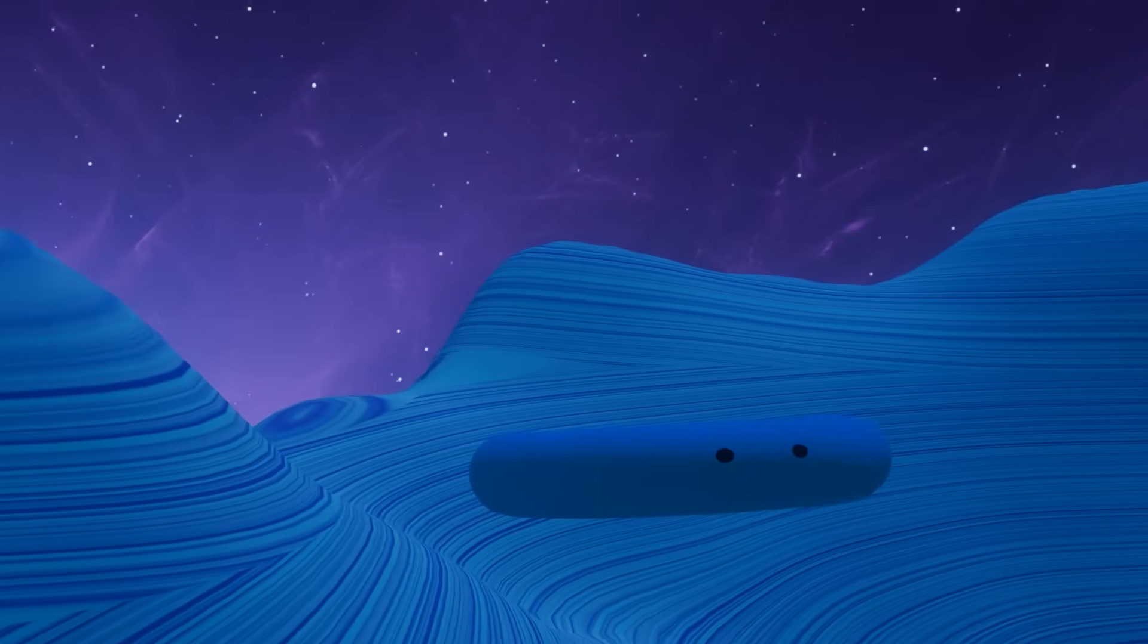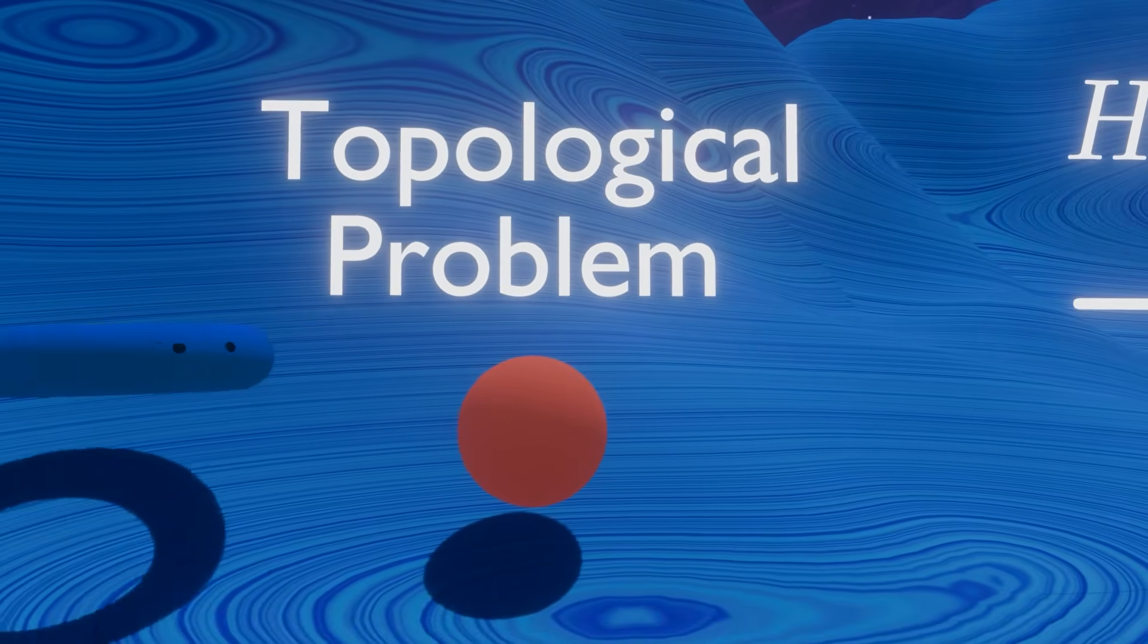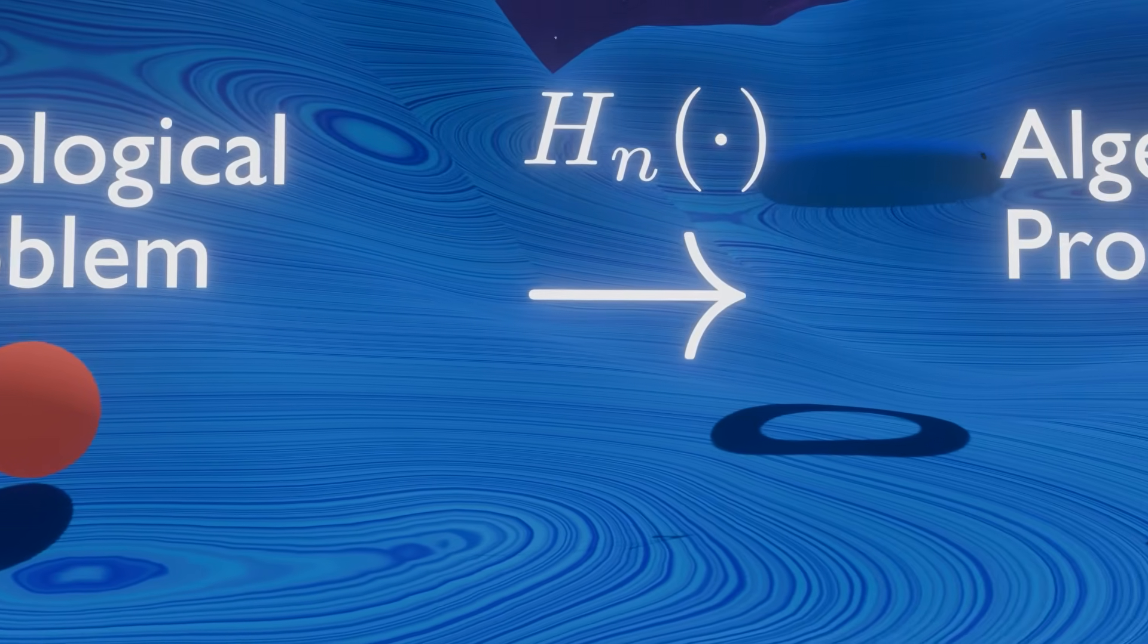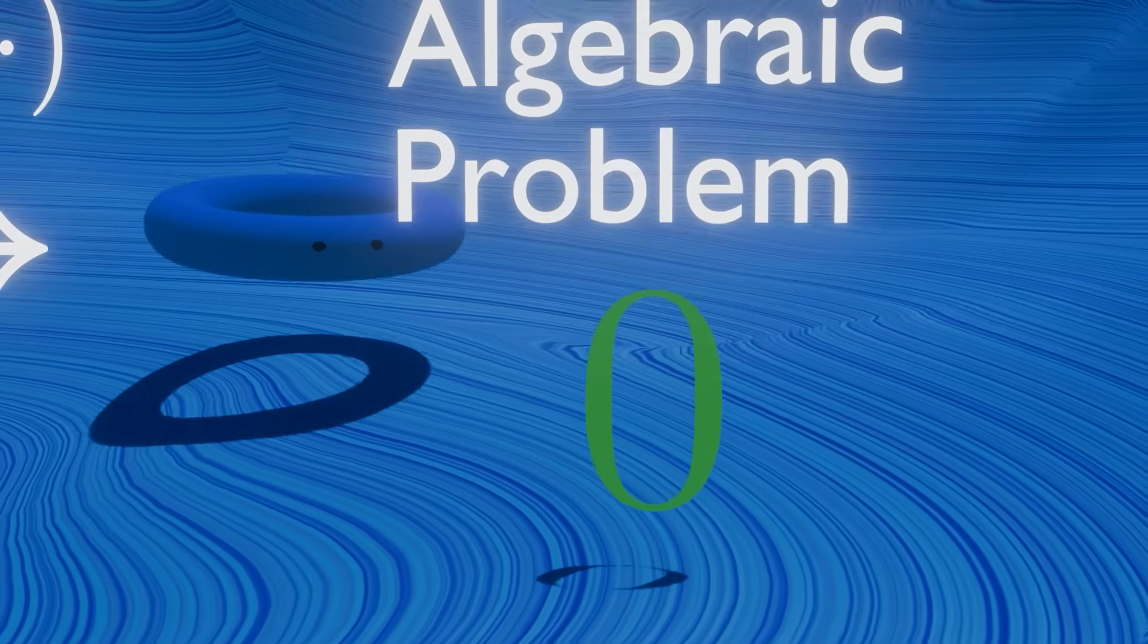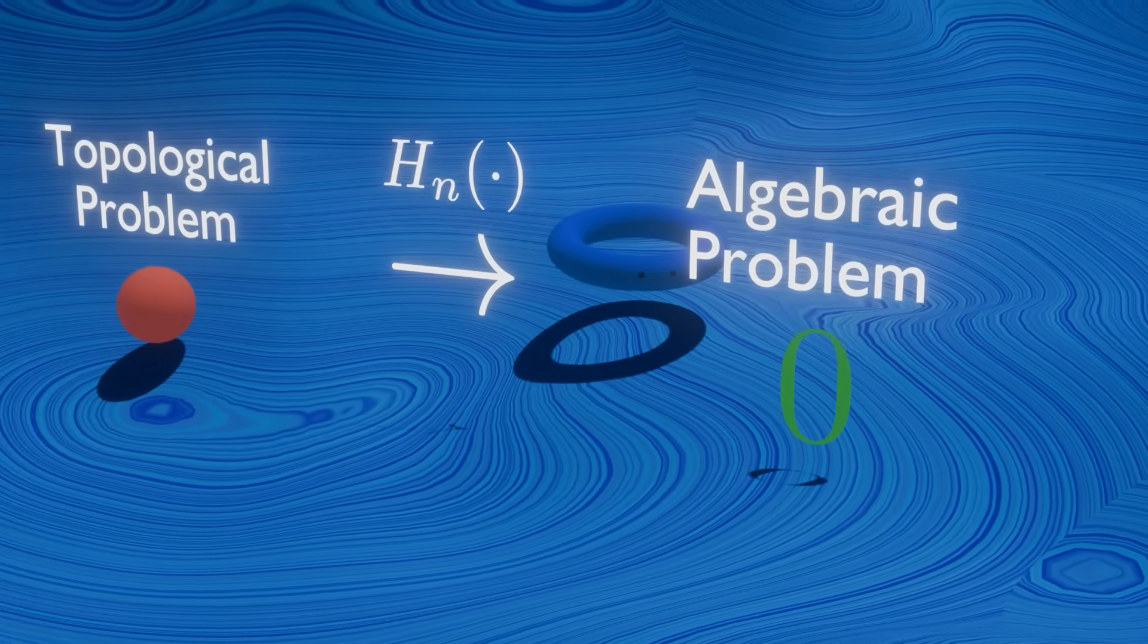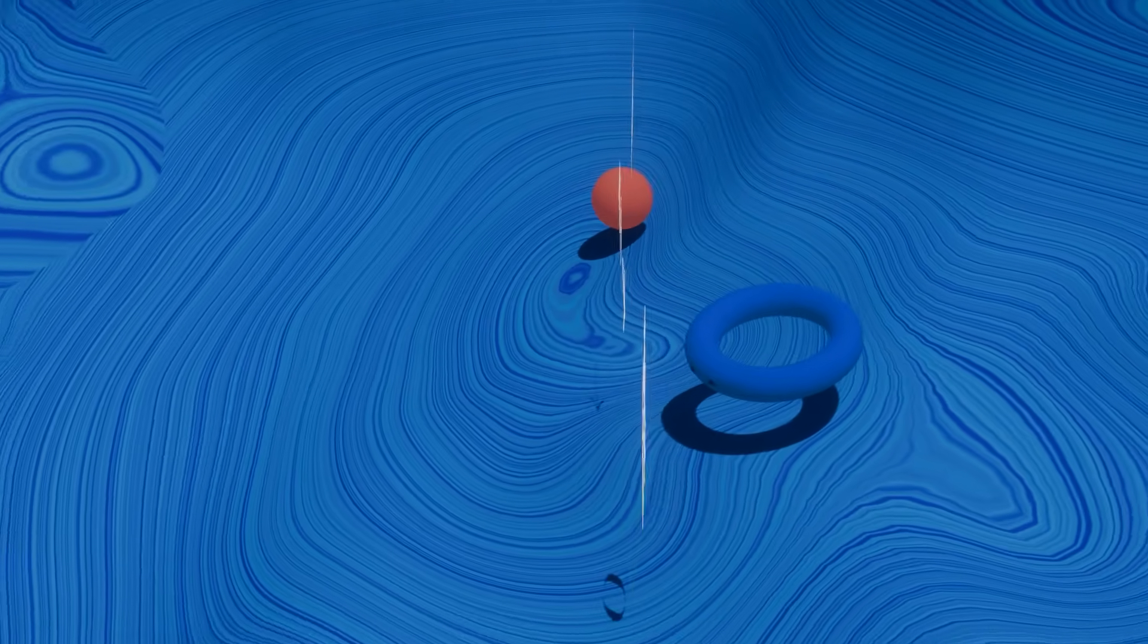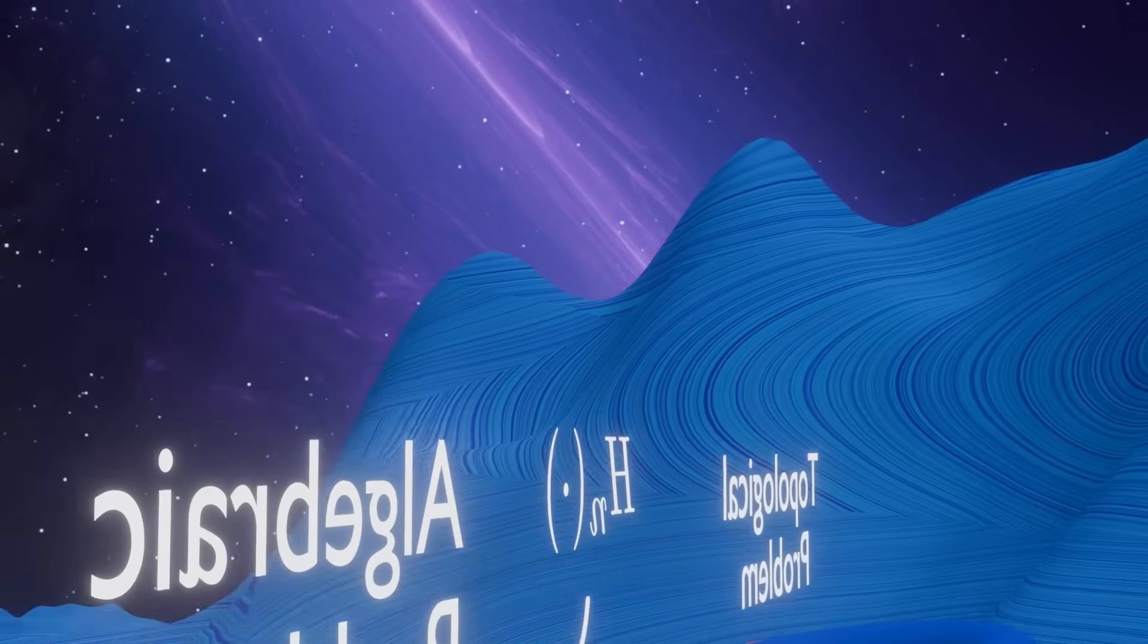This means that every continuous map between filled spheres must have a fixed point. Again, let's recap what we just did. We essentially took our original topological problem and translated it to algebraic terms with the singular homology. Now, when looking at the problem through algebraic terms, it became very clear that a contradiction arises when there are no fixed points. So, the difficult problem in topology became incredibly simple when looking at it through the world of algebra.